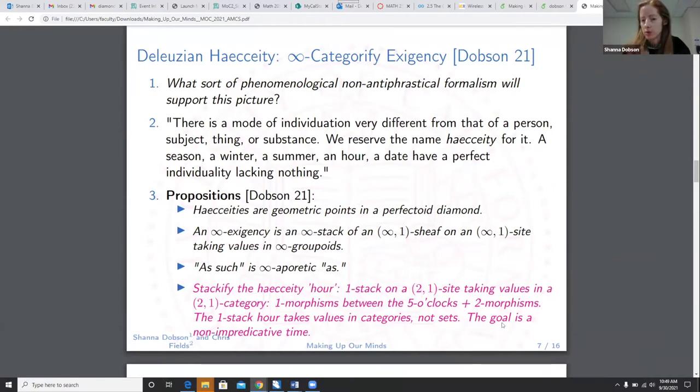We go to the stack version of this. It's an infinity stack of an infinity-one sheaf on an infinity-one site, taking values in infinity groupoids. As such, Derrida's as such is what I call an infinity aporadic as, so it's a stackified version of this. Simple example, you can stackify the haecceity hour. Let's take, we don't have to do math in terms of sets, so let's actually put math in terms of stacks. So take the haecceity hour. Instead of viewing an hour in terms of sets, we can view an hour as a one stack. A one stack is a two-one sheaf on a two-one site, taking values in a two-one category. So in a two category, you have objects, one-morphisms, and two morphisms between the one-morphisms. So you'd actually have one-morphisms between the five o'clock, plus two morphisms between the one-morphisms. This is the level that we're talking about. So the one-stack hour takes values in categories, not sets. The goal is a non-impredicative time.